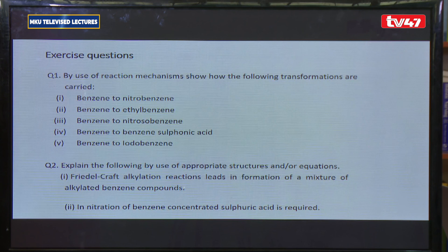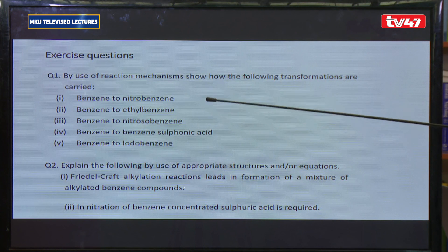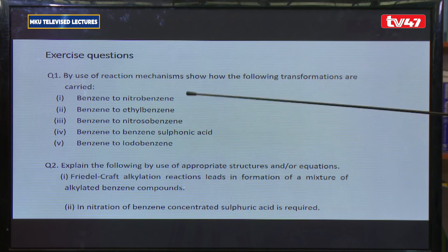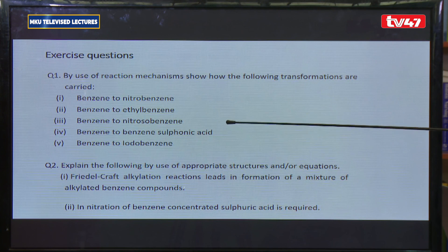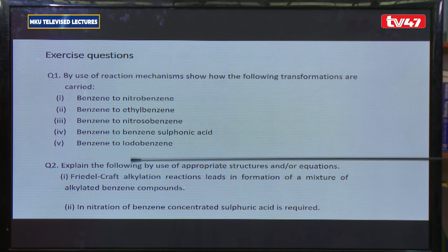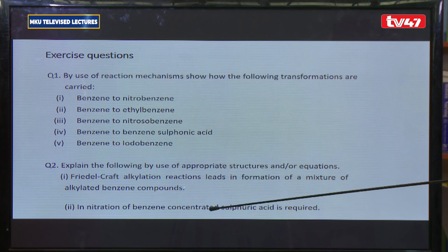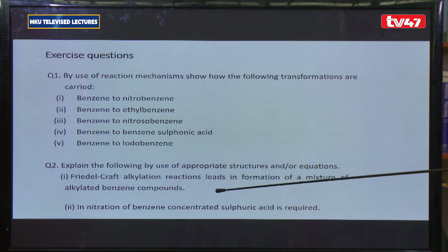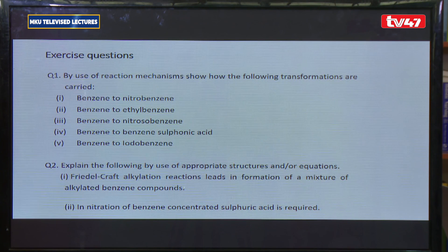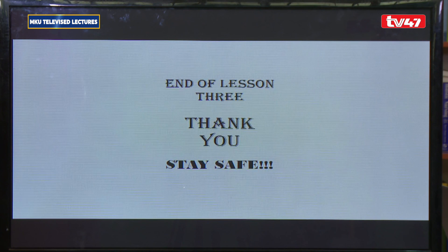Exercise questions: by use of reaction mechanisms, show how the following transformations are carried out — benzene to nitrobenzene, benzene to ethylbenzene, benzene to nitrosobenzene, benzene to benzene sulfonic acid, benzene to iodobenzene. Also explain Friedel-Crafts alkylation and the nitration of benzene in the presence of sulfuric acid. That is the end of Lesson 3 in the Chemistry of Aromatic Compounds.